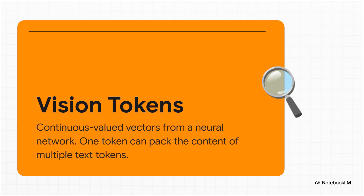Now, vision tokens, they are a whole different ballgame. There is no dictionary. A neural network looks at a patch of an image and generates a complex vector, basically a long list of numbers that describes that little patch in incredible detail. And because this vector is continuous, not just a single ID number, it can pack in way more information. It can capture the meaning of several words, their layout, their font, all in one shot.